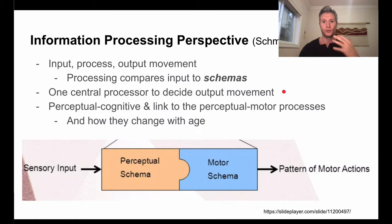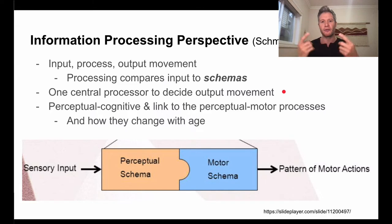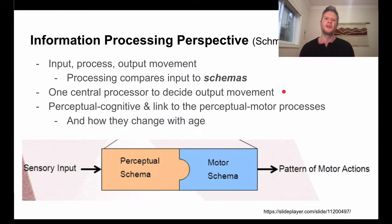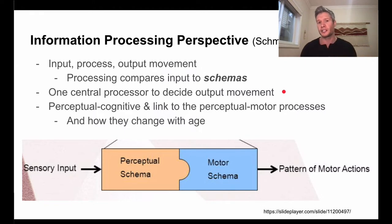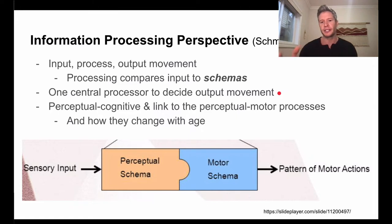One issue with the information processing perspective is that we essentially have one processor to determine movement. If you're getting input, you have one processing system it must go through before you produce output. If you're trying to do two or more things at once, it gets really challenging. Attention to multiple things can still only be processed by one pathway according to this perspective, which is a bit of a downfall.